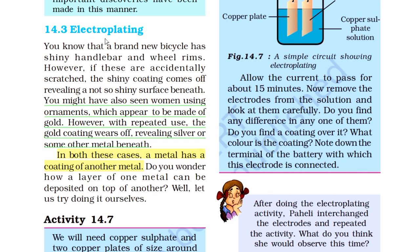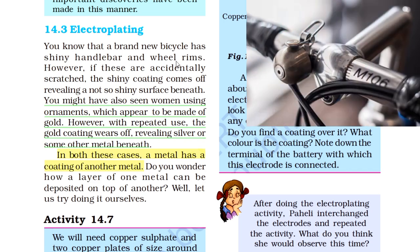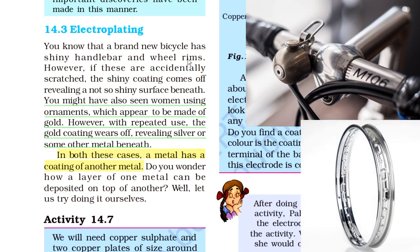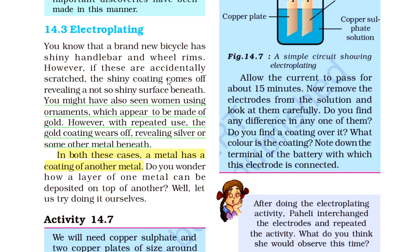A brand new bicycle has shiny handle bars and wheel rims. But if these are accidentally scratched, the upper coating comes off, revealing a not-so-shiny surface below — meaning that below the shiny metal there is another base metal. This is because of electroplating — the handle bar is coated with a shiny metal to make the cycle look beautiful.